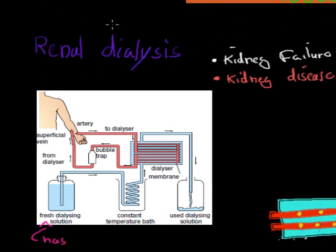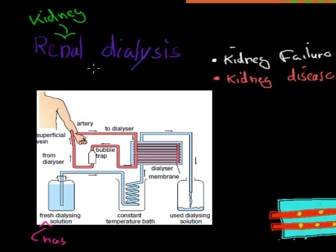First I'll go over what renal dialysis actually means. Renal refers to kidney — anything with the word renal in it refers to the kidney itself. Remember from the last video we talked about the renal artery and renal vein, which refer to the kidney's artery and vein. So renal dialysis is the treatment that people go through if they have lost their kidney function or if they have kidney disease.